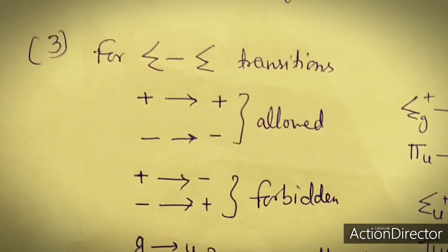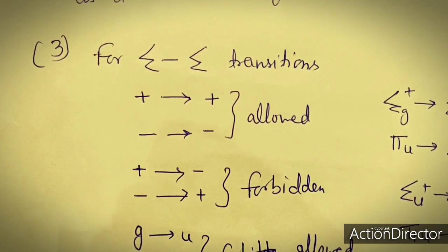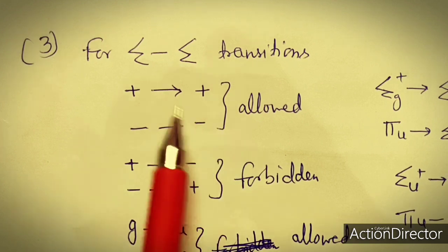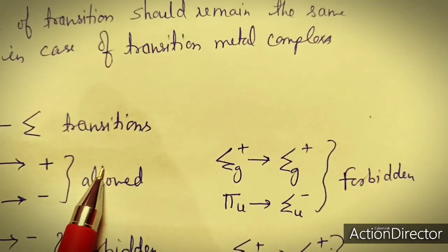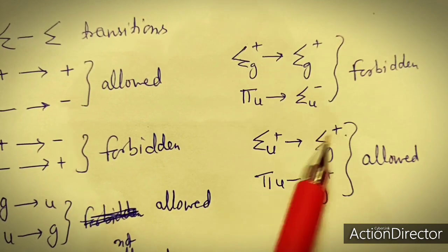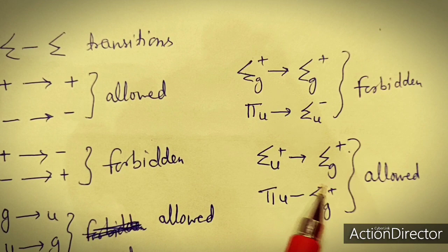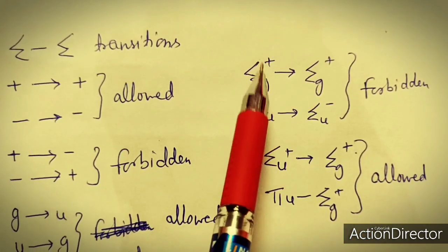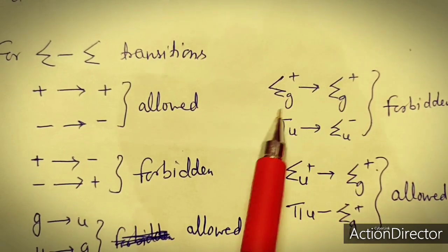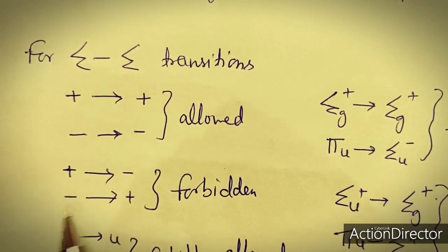The third selection rule for sigma–sigma transitions concerns the plus/minus labels: plus→plus and minus→minus transitions are allowed, while plus→minus and minus→plus transitions are forbidden.